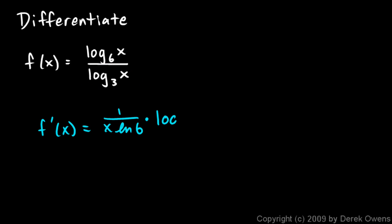is log base 3 of x, all of that minus the numerator, which is log base 6 of x, times the derivative of the denominator, which is 1 over x ln 3. And it's all of that over the denominator...